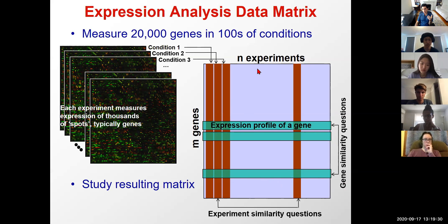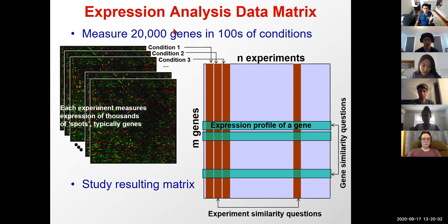Alternatively, you can ask which experimental conditions are most similar. For example, if one condition represents schizophrenia and another represents a medical intervention, you could say that intervention perhaps mirrors or opposes the directionality of change in schizophrenia — and perhaps makes a good drug target. So you can ask questions along gene-to-gene comparisons or condition-to-condition comparisons — either using the 20,000-long vectors to compare different experiments, or the shorter vectors to compare different genes.